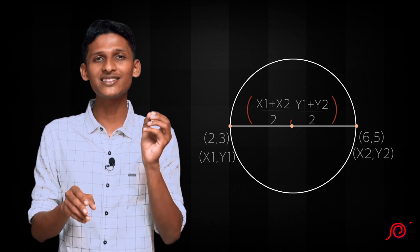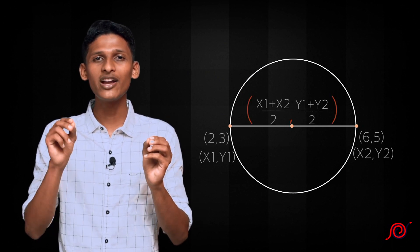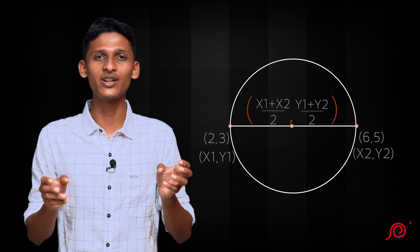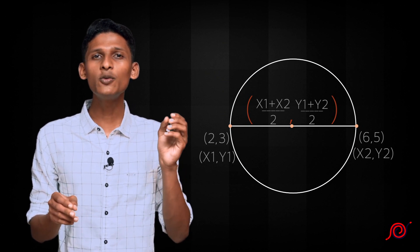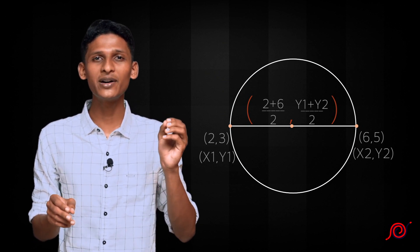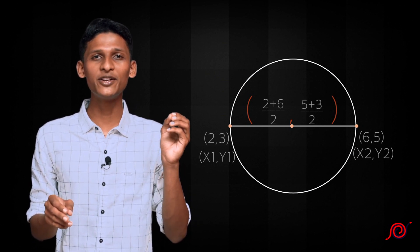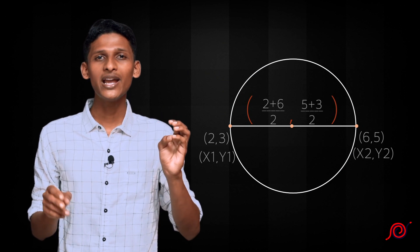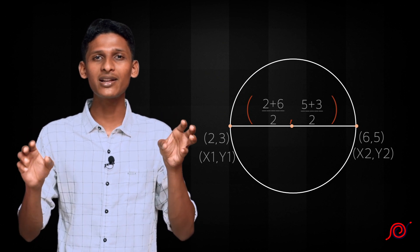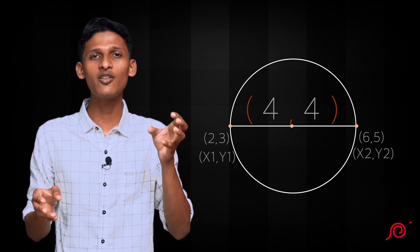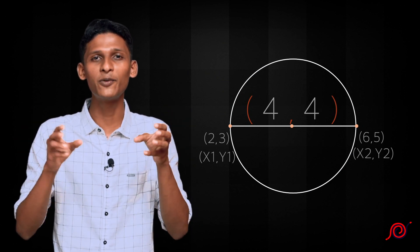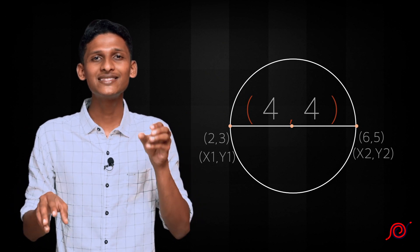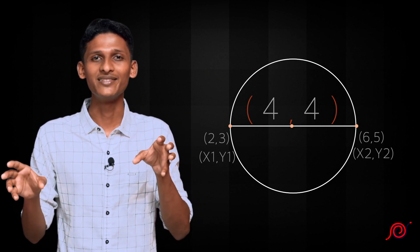We apply the midpoint formula: x1 plus x2 by 2 and y1 plus y2 by 2. That gives us 2 plus 6 by 2 and 5 plus 3 by 2. The center of the circle is the midpoint of the diameter, which is 4, 4.